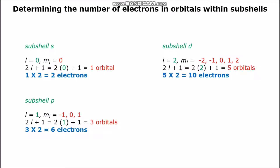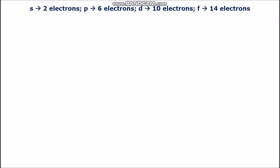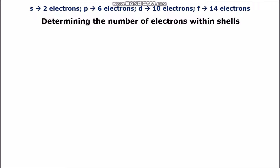Sub-shell D has 5 orbitals, therefore it will have 10 electrons. And the same concept applies to sub-shell F, given a total of 14 electrons. No more than 14 electrons can occupy the orbitals within sub-shell F. Now that we know how many electrons are present in the orbitals of each sub-shell, we can use that information to find the total number of electrons in a shell.